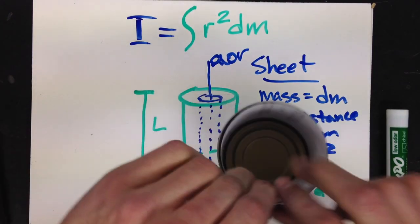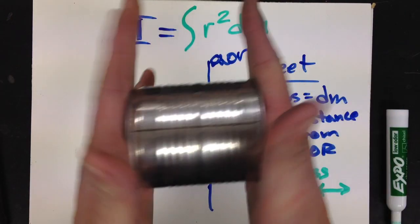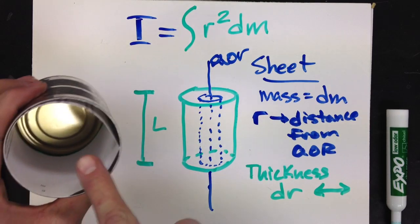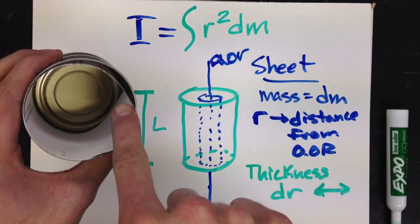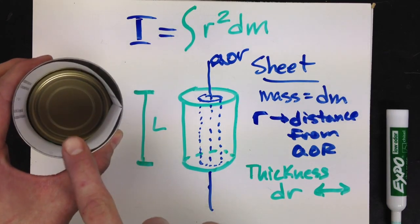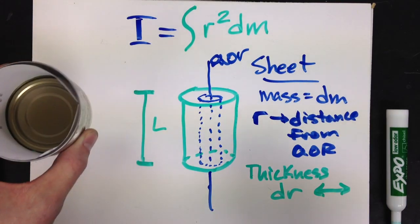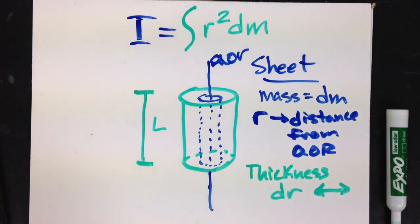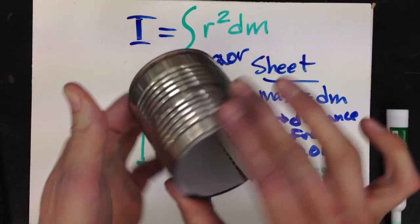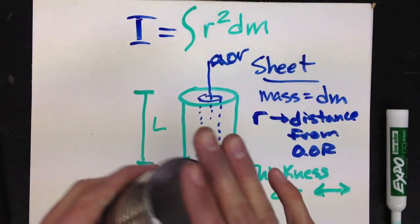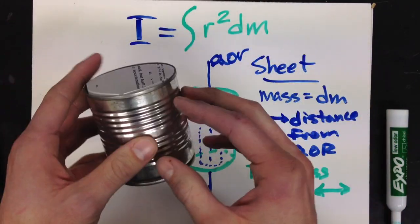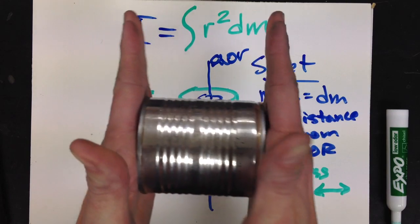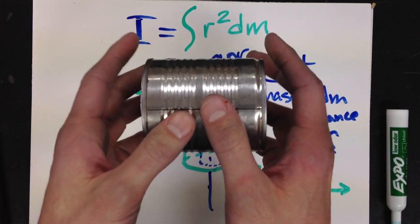So the sheet inside here has a mass dm. It's a distance r from the axis of rotation, and the sheet itself has a thickness dr. Now, what's useful when we're talking about a solid three-dimensional object is the fact that its density is uniform throughout the object, meaning it has uniform mass distribution.